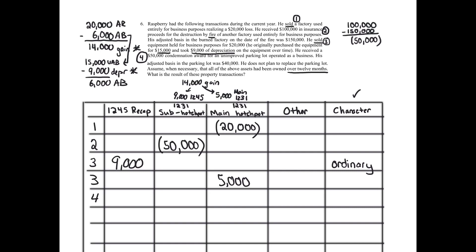Number four: he received a $50,000 condemnation award for an unimproved parking lot operated as a business. His adjusted basis is $40,000. We calculate the gain: $50,000 amount realized minus $40,000 adjusted basis — we have a $10,000 gain. He does not plan to replace the parking lot, meaning Section 1033 involuntary conversion cannot apply. So the $10,000 gain will be realized and recognized.